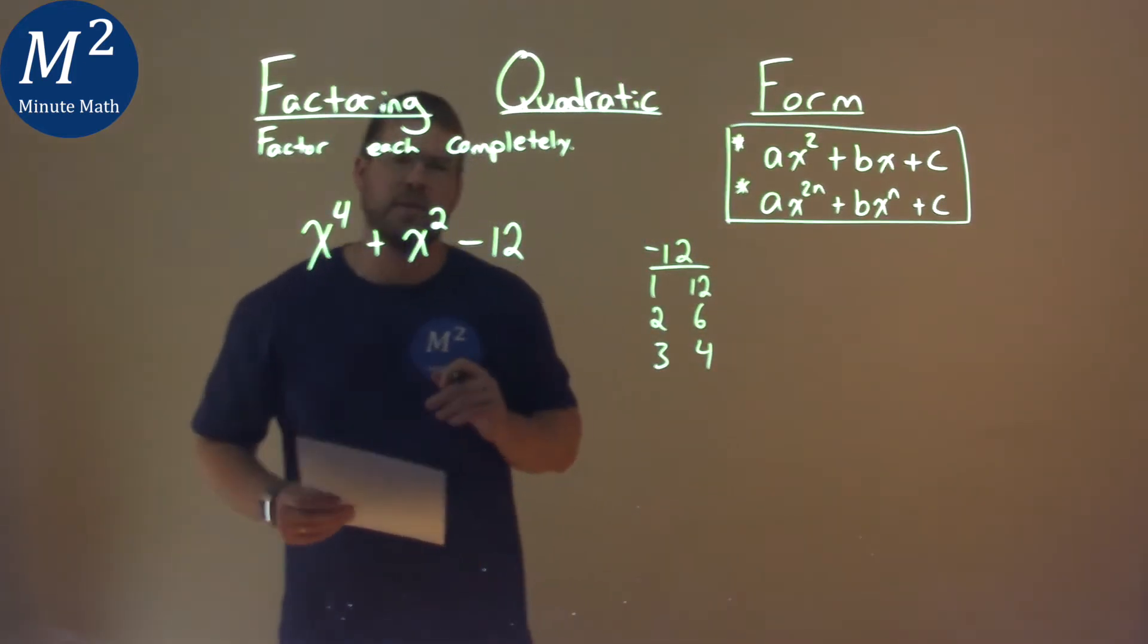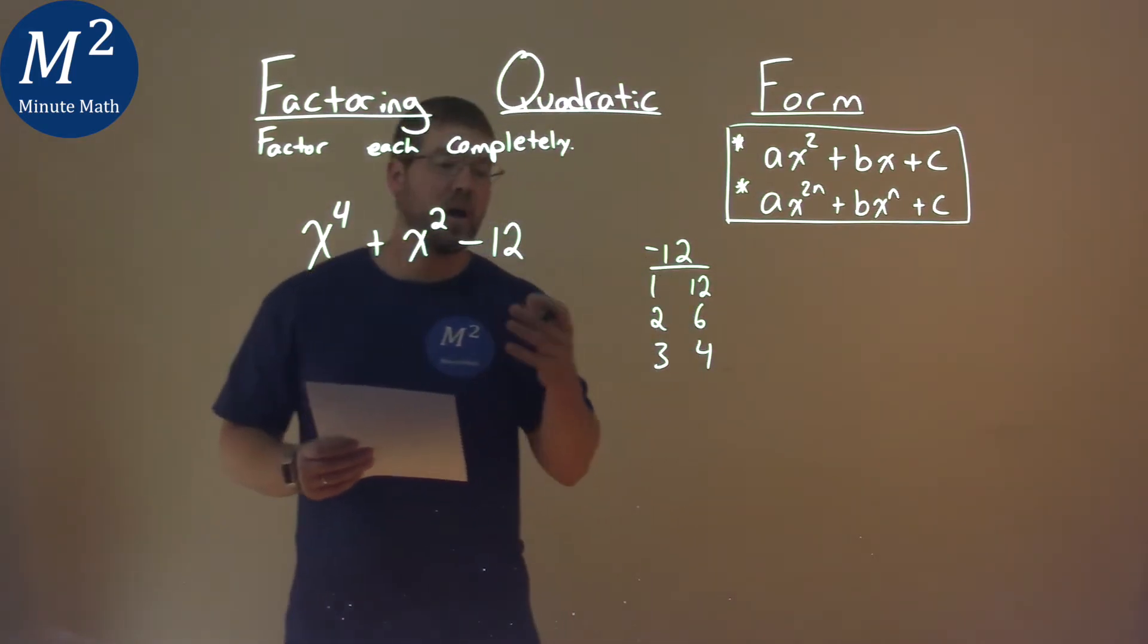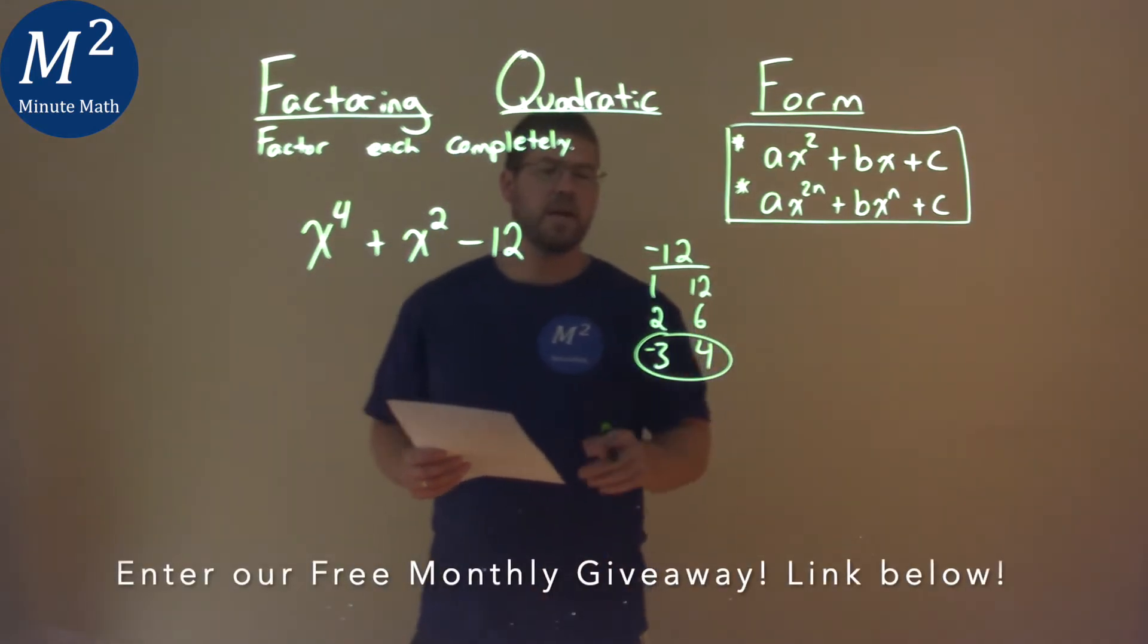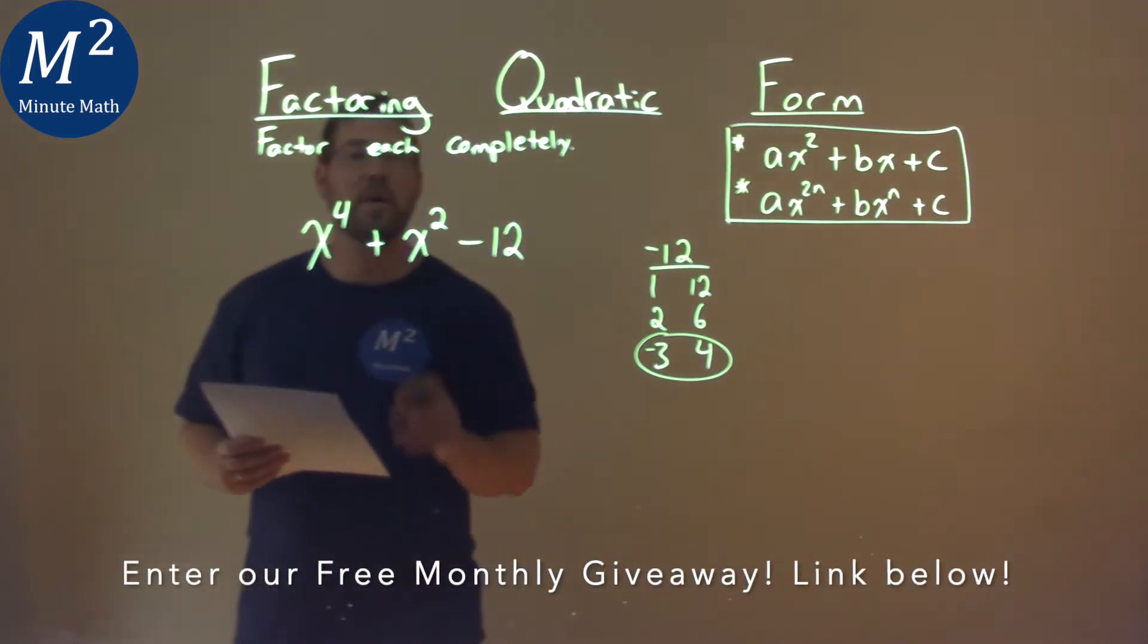We then look at our b value here, and see which one's added together as a positive 1. And I'm thinking that's a 3 and the 4. If the 3 is negative and the 4 is positive, negative 3 times 4 is a negative 12. When we add the two together, we get the 1.